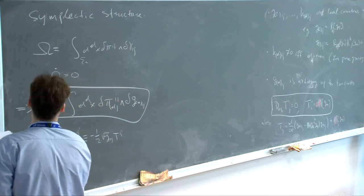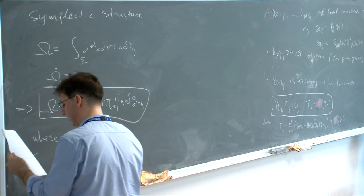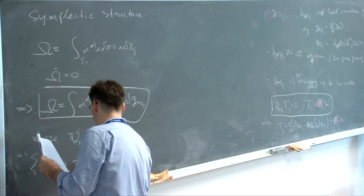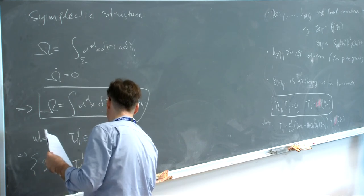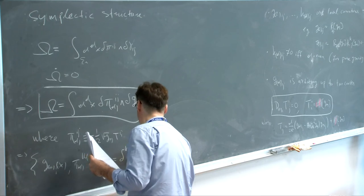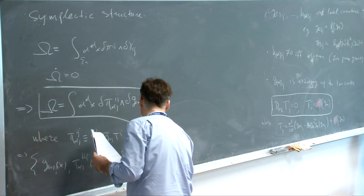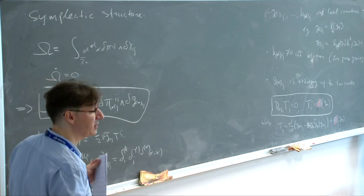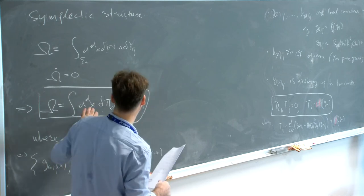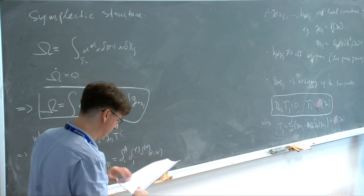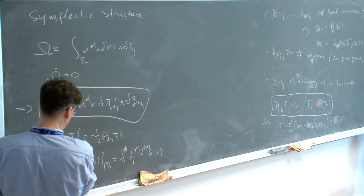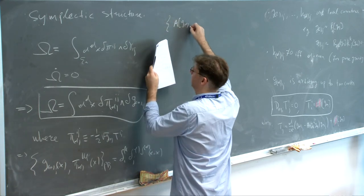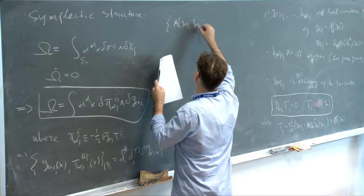If you do this, what you find is that on this reduced phase space, omega becomes: omega = integral of delta(T_ij) wedge delta(g0^ij), where T_ij is defined to be minus one-half times T_ij from before — related to g_d by a particular combination. You see that it is indeed independent of the radial coordinate. And secondly, T_ij and g0_ij are symplectic conjugate variables.